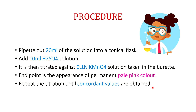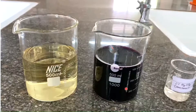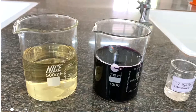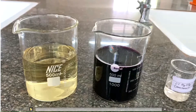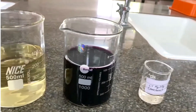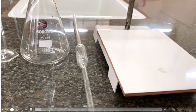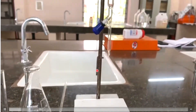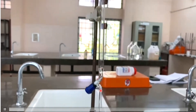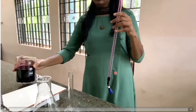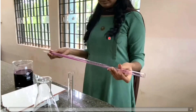We will record concordant values and repeat the titration. Then we set up the apparatus and do an initial experiment. We fill the burette with KMnO₄ solution.